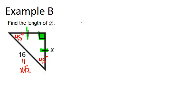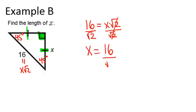We can set up a little equation that's 16 equals x root 2 and we're trying to solve for x. This is just multiplication x times root 2 so we can divide both sides by root 2 in order to get x by itself. That means x equals 16 divided by root 2.